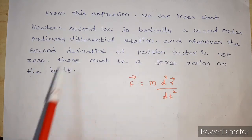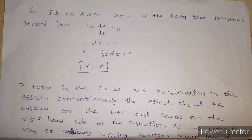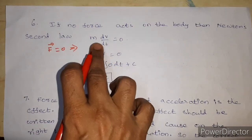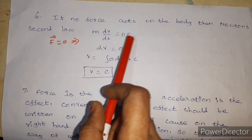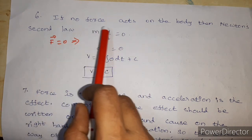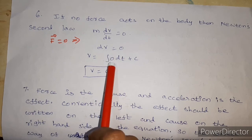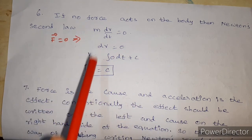Sixth point: if no force acts on the body, then F vector equals zero. So M times dv/dt equals zero, which means dv equals zero. Integrating, V equals a constant. If no force acts on the body, the velocity remains constant.